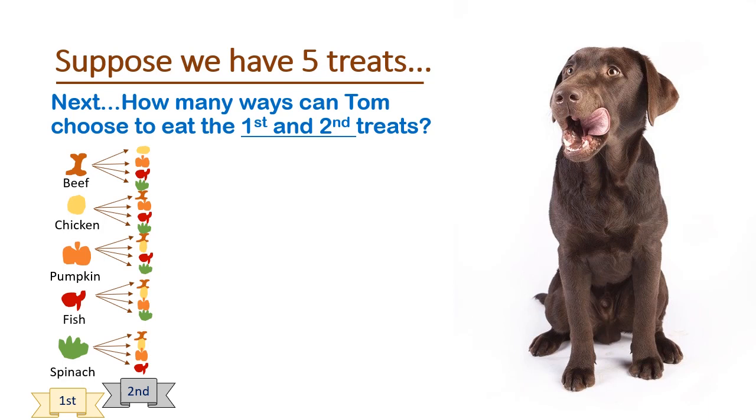And remember, at the end of the day, Tom only gets to actually have two treats. So for example, he could have chosen the beef and the chicken treat, or he could have chosen the chicken and pumpkin treat. He could have chosen the pumpkin and spinach treat. He could have chosen any one of these two different options shown here in this tree diagram.